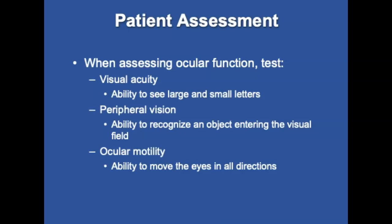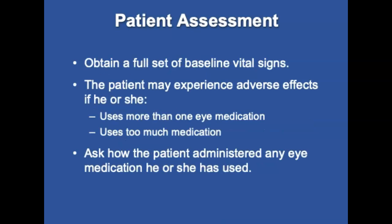When assessing ocular function, perform the following tests: a visual acuity test — assess the ability to see large and small letters, test each eye separately, and document results; a peripheral test — test the ability to recognize objects entering the extremities of the visual field; and ocular motility — check the ability for eyes to move in all directions, checking for paralysis of gaze or discoordination between movements of the two eyes, known as disconjugate gaze. Obtain a full set of vitals and reassess every 5 or 15 minutes depending on the patient's condition. Ask the patient about any medications used, and generally wait 5 minutes between the first and second drop.